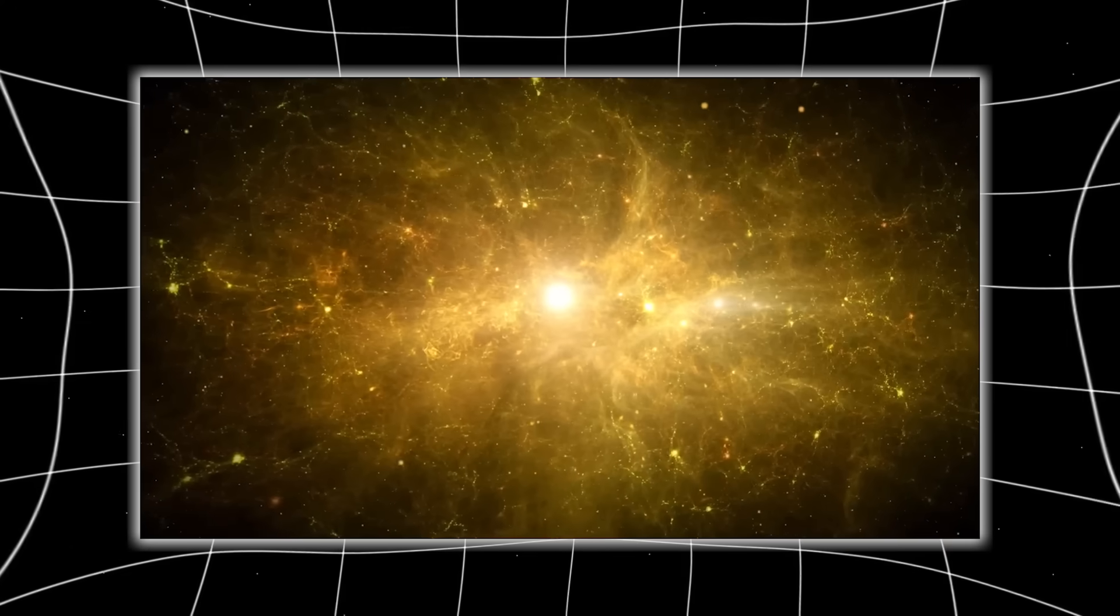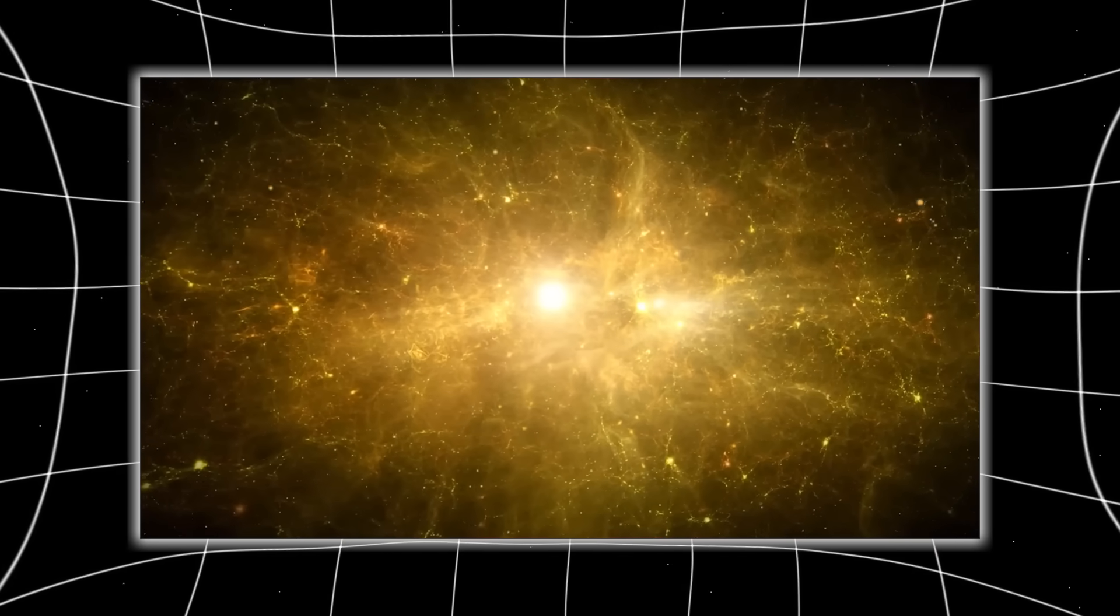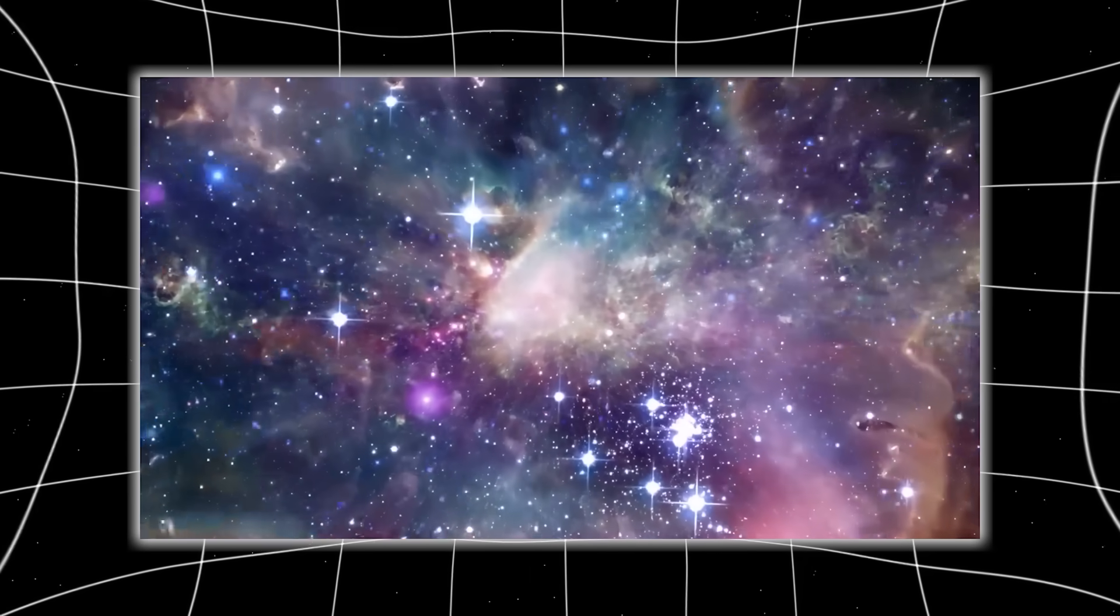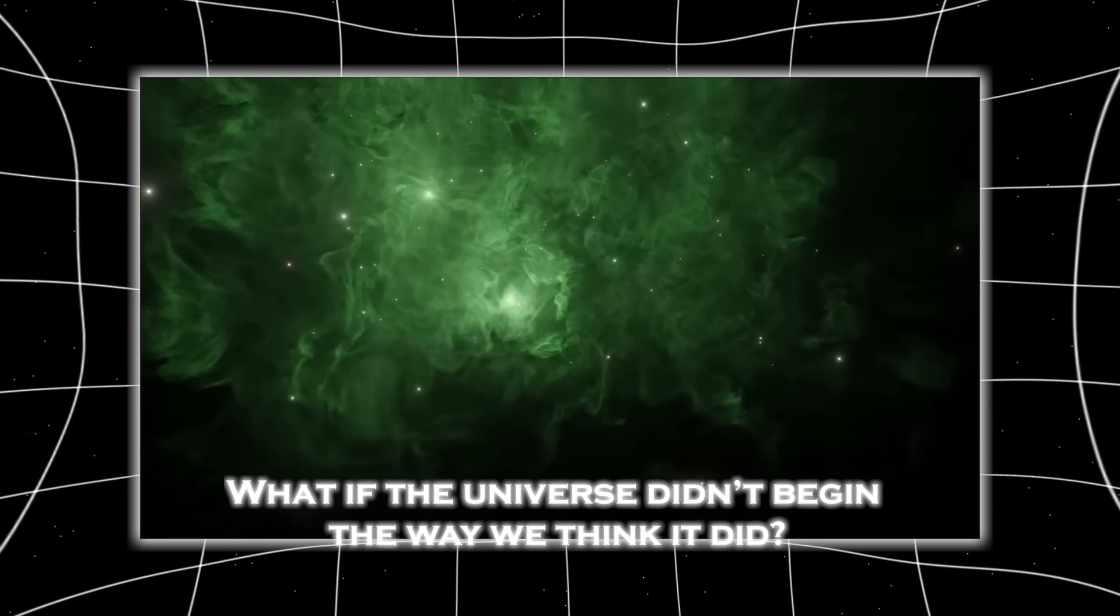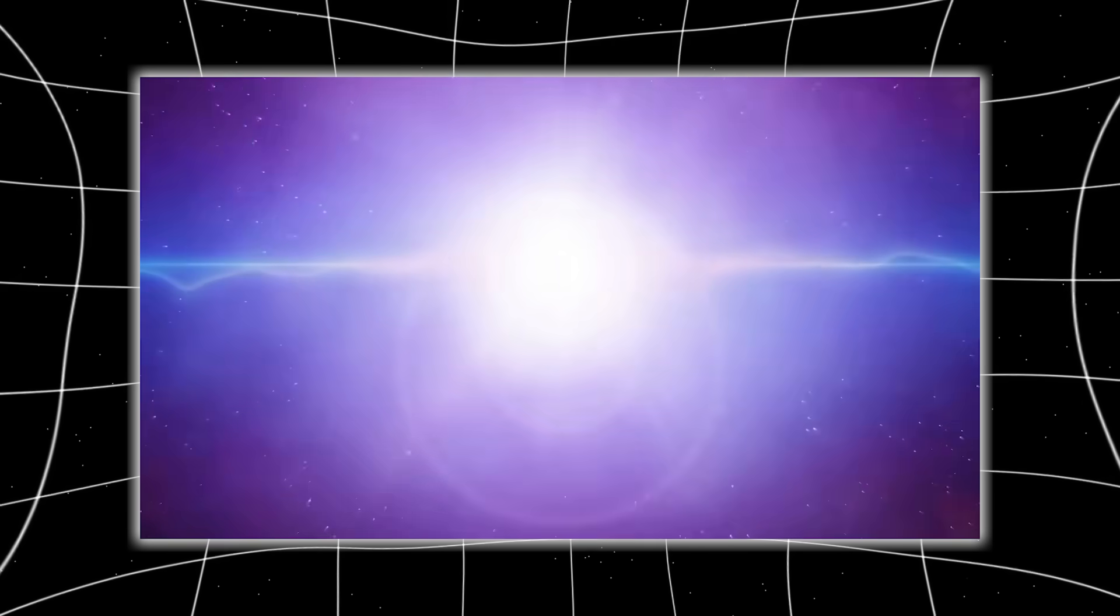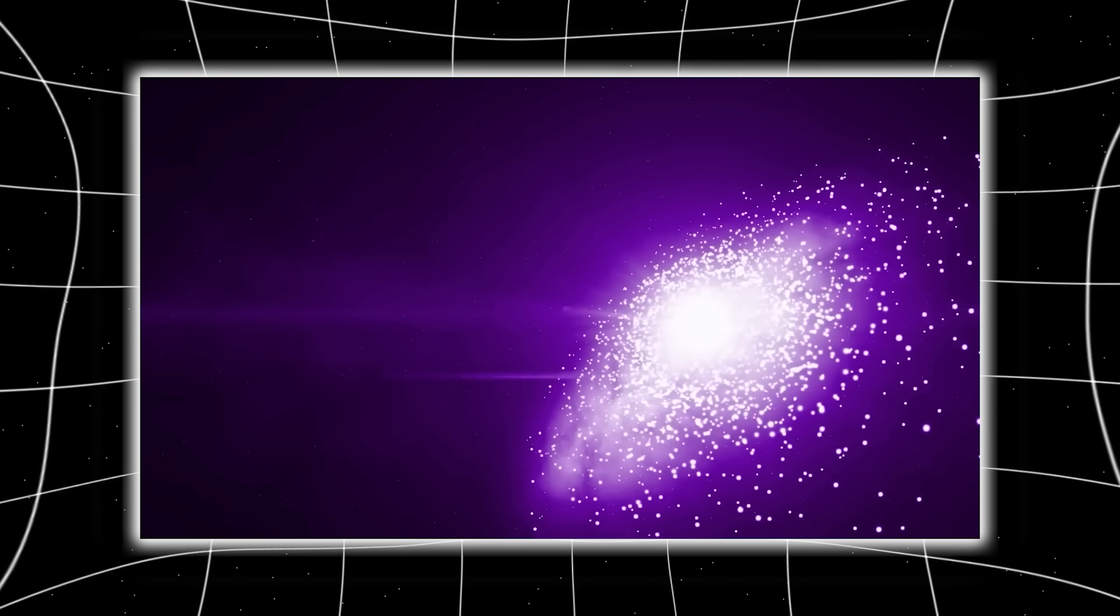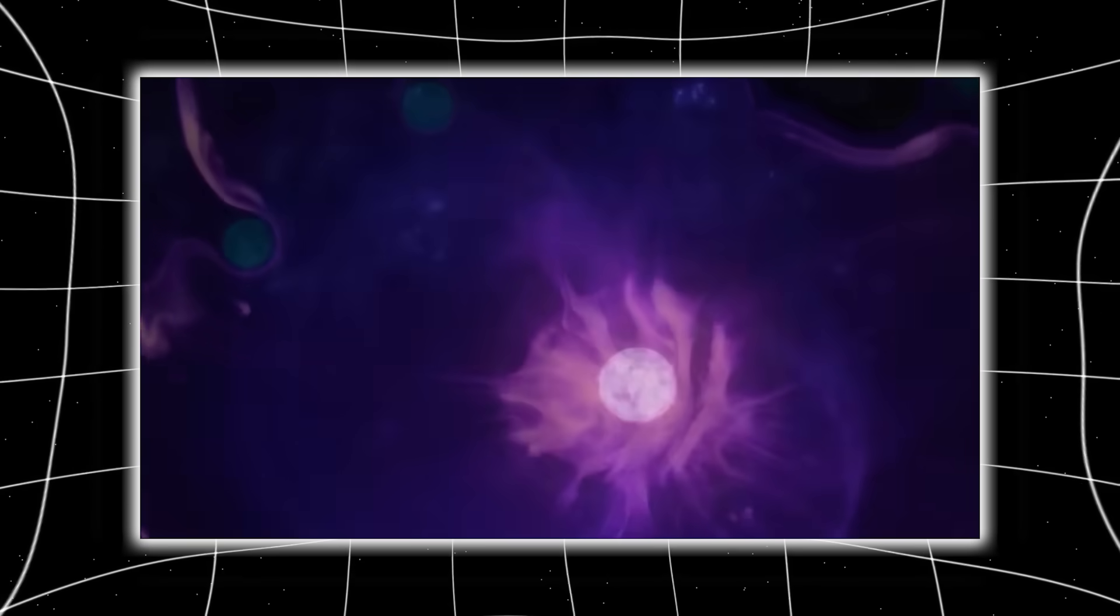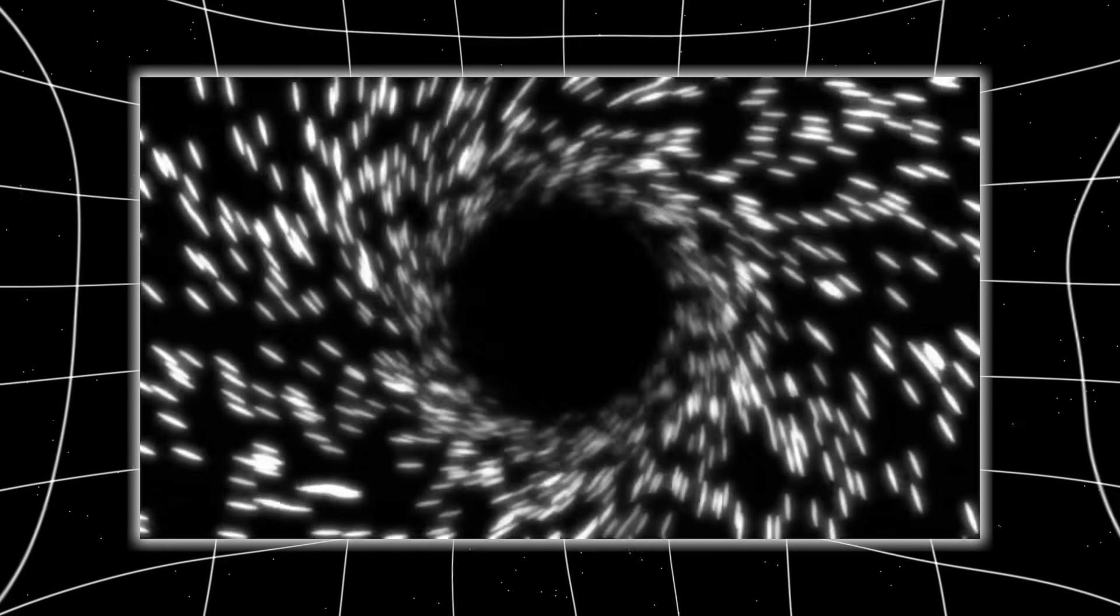The early universe looks too old, too mature, too organized. And that forces a terrifying question. What if the universe didn't begin the way we think it did? What if the Big Bang wasn't a beginning, but a transition? What if the observable universe is just the surface layer of something much older, much deeper, much stranger than our equations were designed to handle?